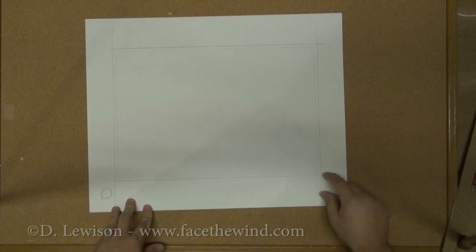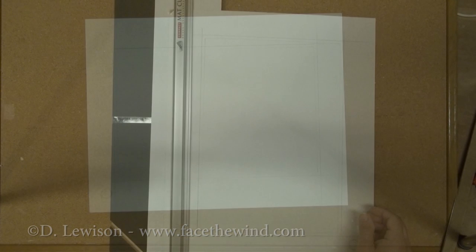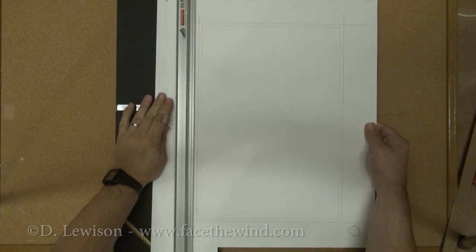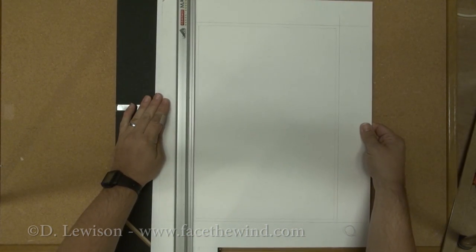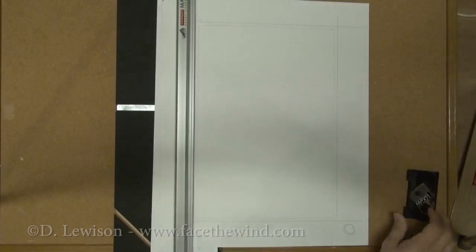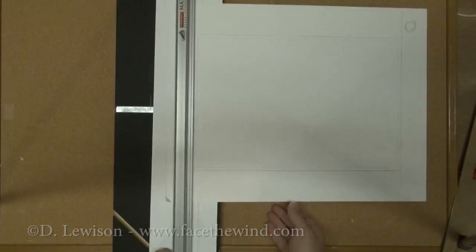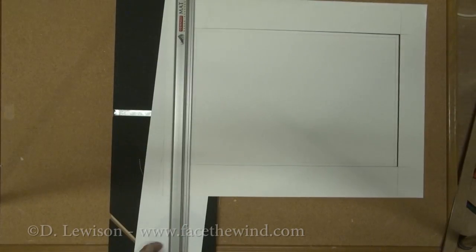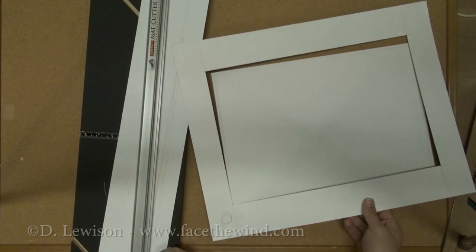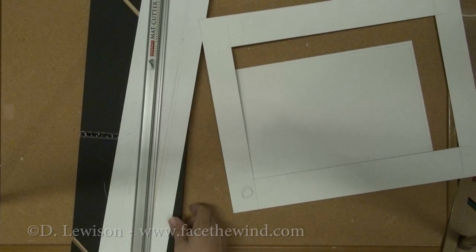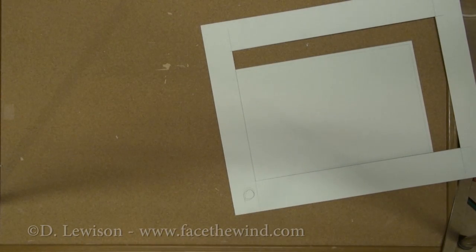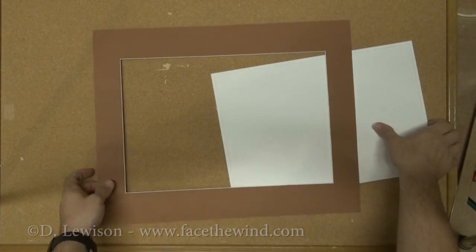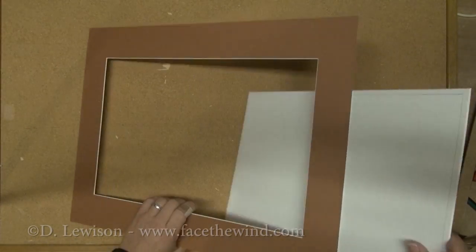Now when you're cutting this, make sure only cut the outer set of lines that you made. Okay, now the middle mat is complete.